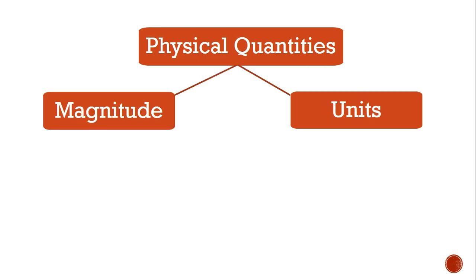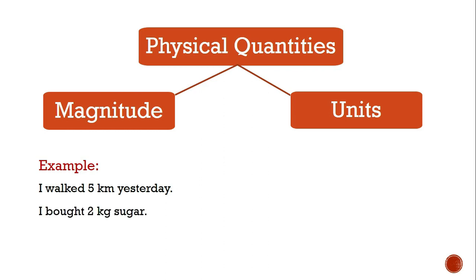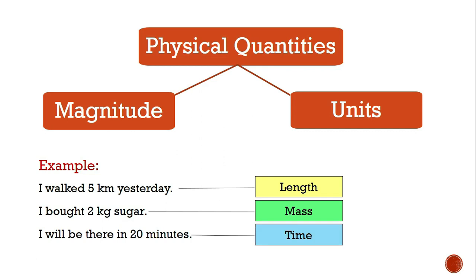Now, in order to express any physical quantity appropriately, we need two things: its magnitude and its units. For example, if I say I walked five kilometers yesterday, or I bought two kg of sugar, or I will be there in 20 minutes — in each of these statements I am talking about a physical quantity, namely length, mass, and time. So five kilometers, 2 kg, and 20 minutes are the physical quantities, and to represent them we take the help of both magnitudes and units.